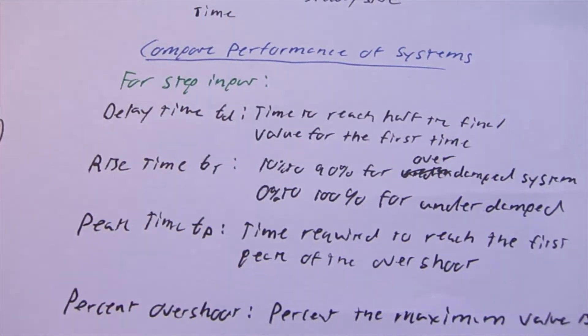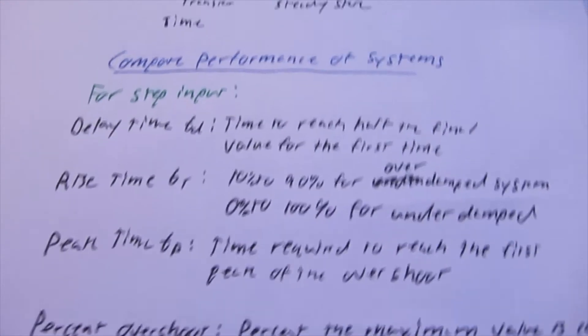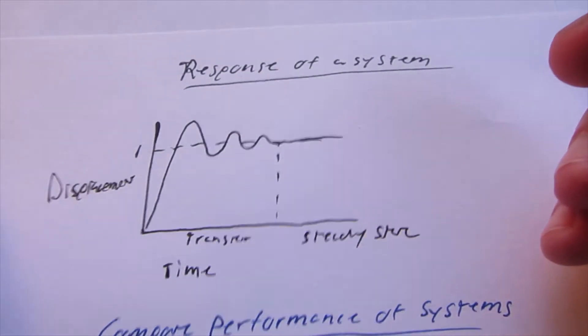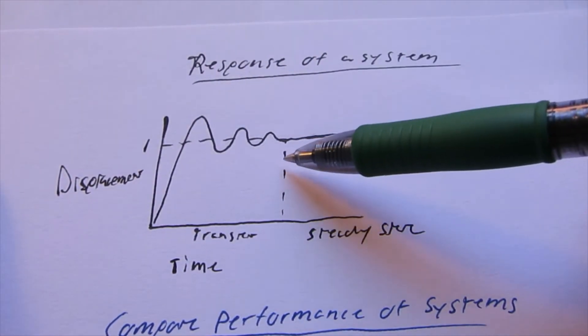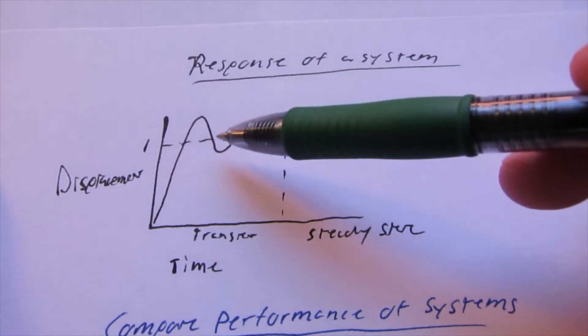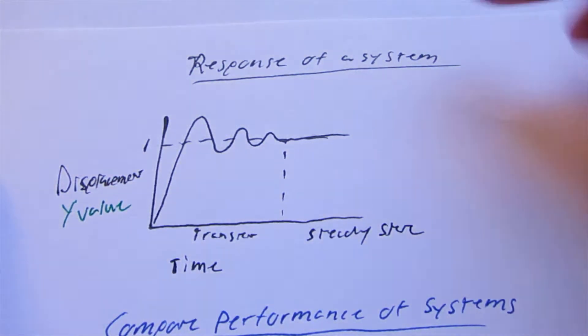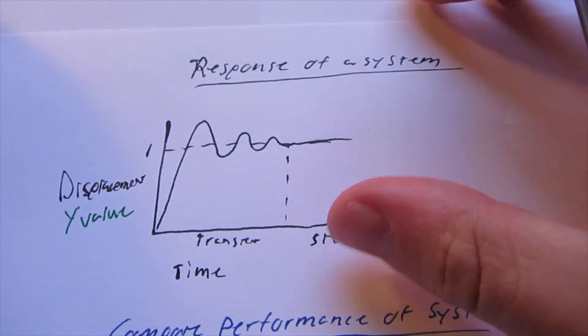All right, so for a response to unit step input, when plotted on time domain, it would look something like this, where this is an underdamped system. That's why there's the oscillation. So it could be displacement or whatever, just some y value.